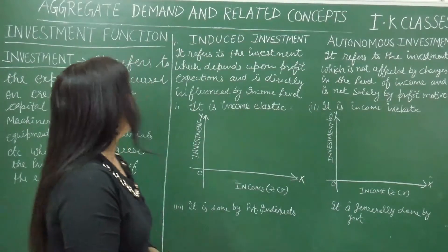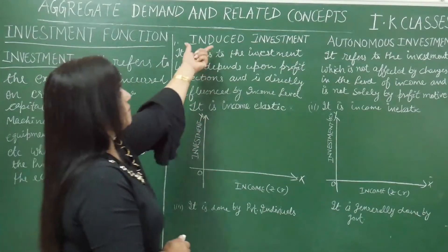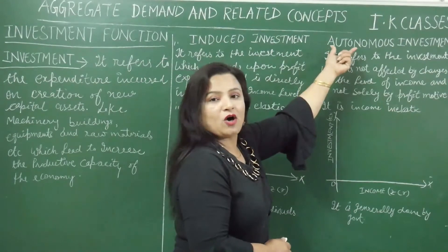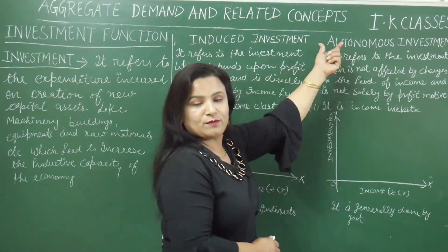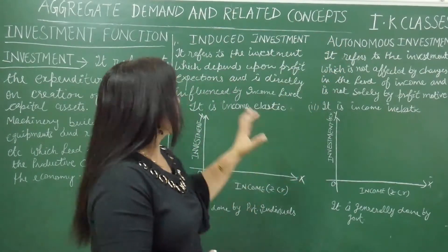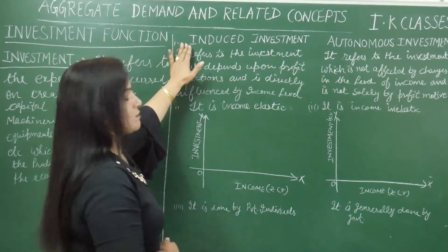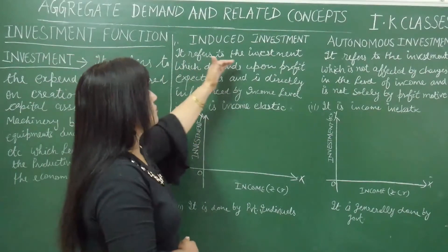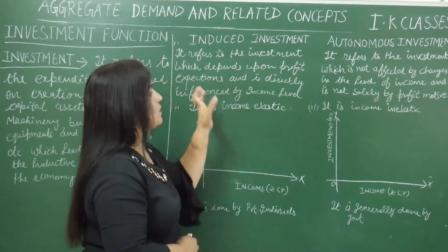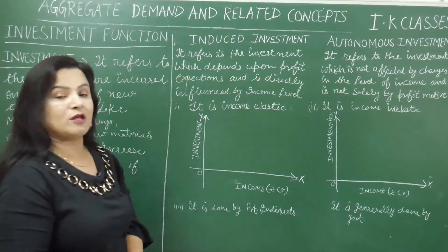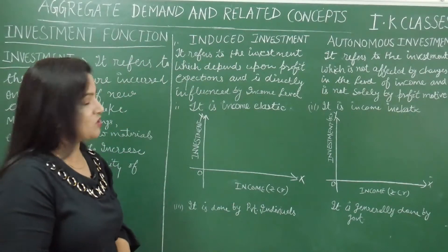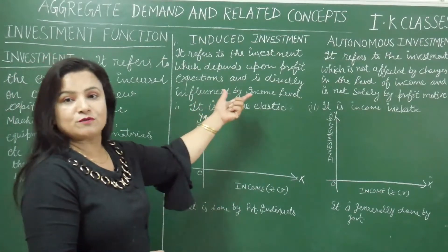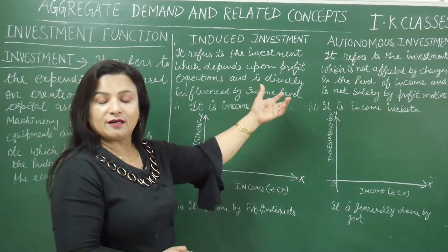Investment is of two types: induced investment and autonomous investment. What is induced investment? Induced investment refers to the investment which depends upon profit expectations and is directly influenced by the income level.